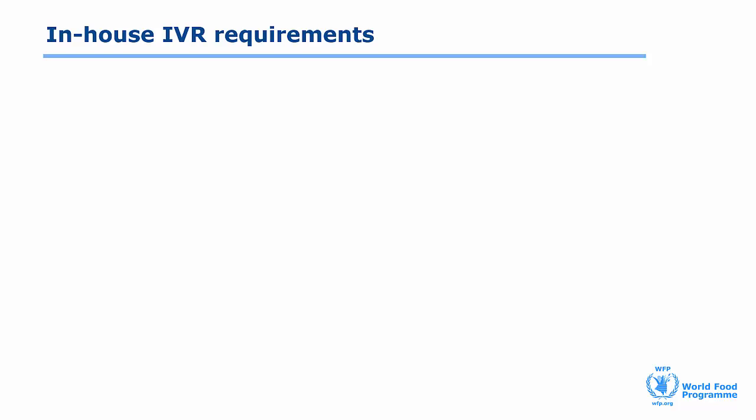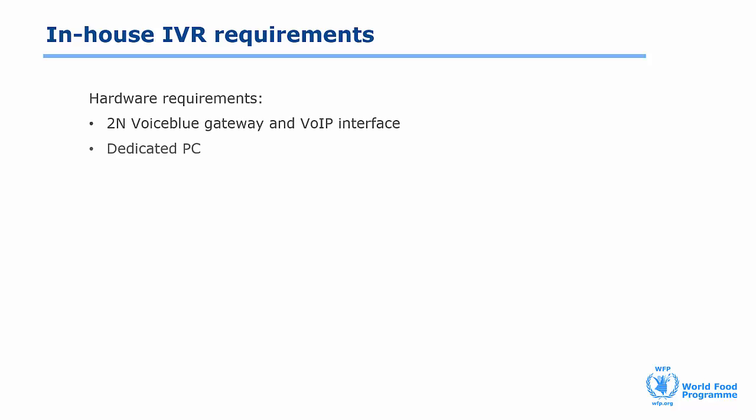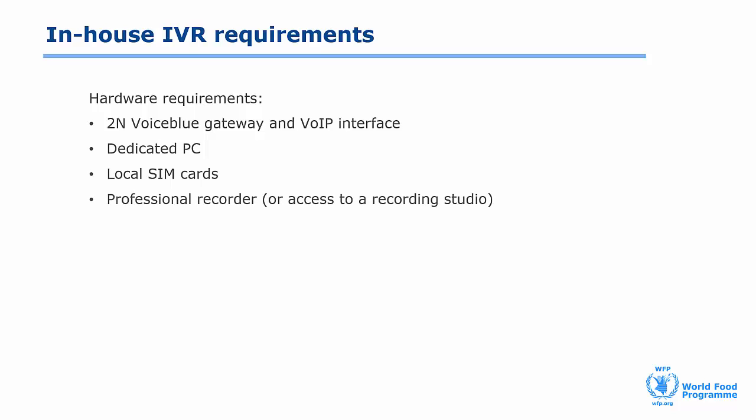First, in-house deployments. For an in-house deployment, you need to procure your own hardware and software. In terms of hardware, you need the 2N VoiceBlue gateway and a VOIP interface, a dedicated PC, local SIM cards — 2 or 4 depending on the VoiceBlue model — and a professional recorder. This is used to record the IVR messages. Alternatively, you can record your messages in a recording studio.